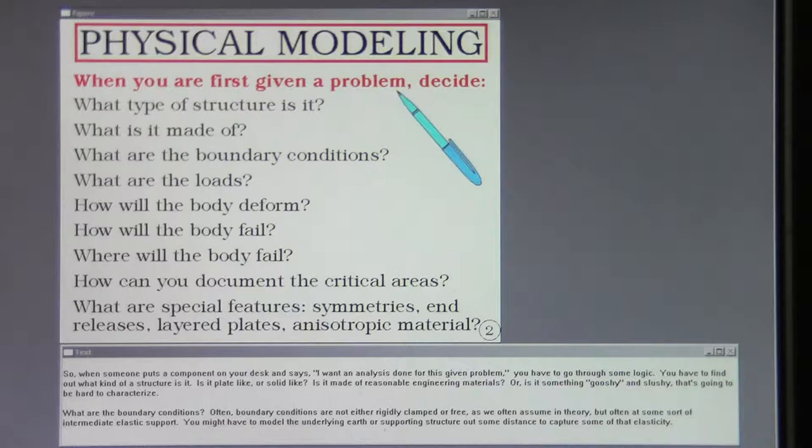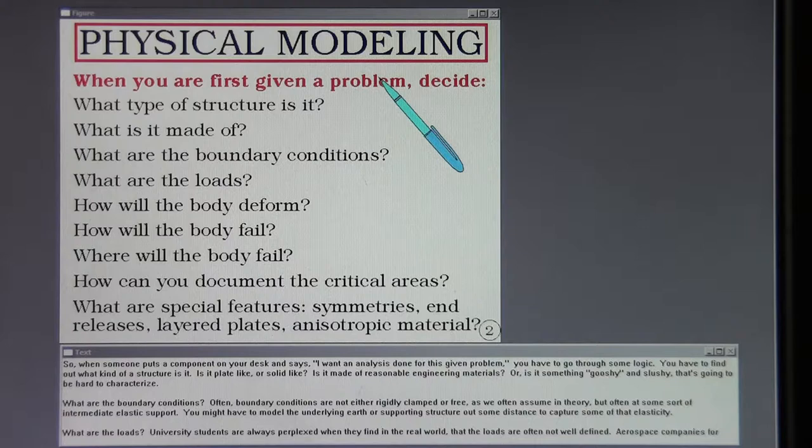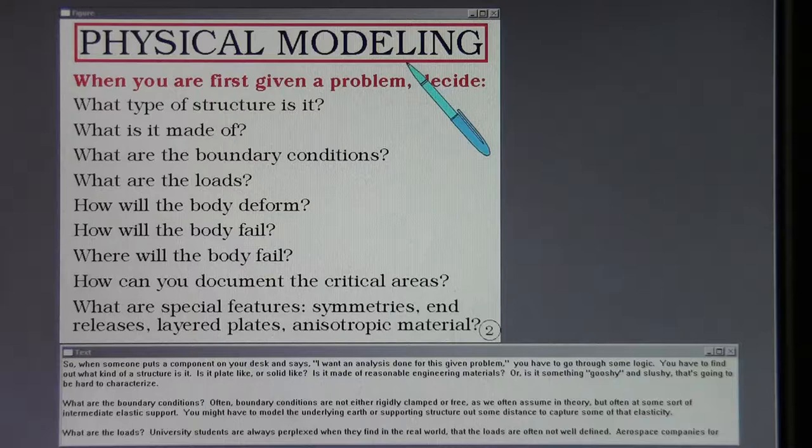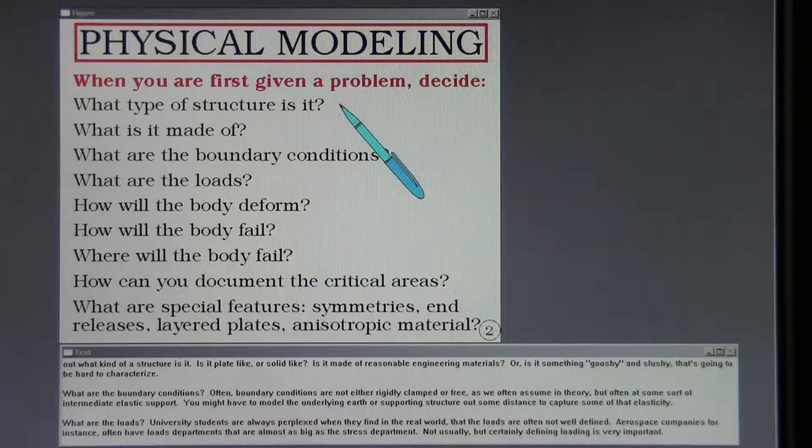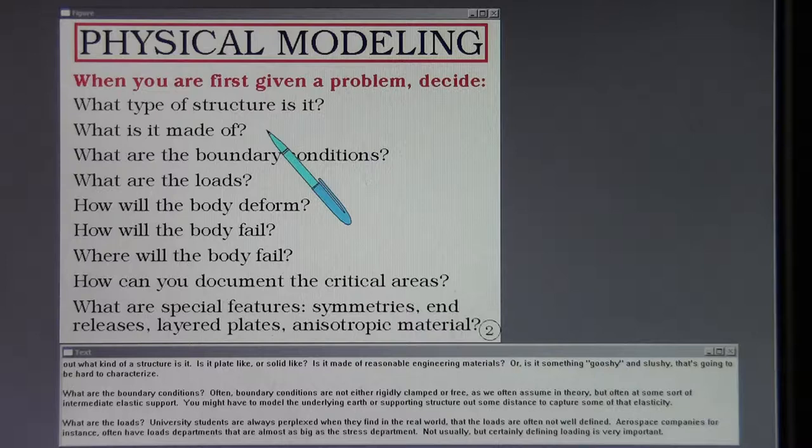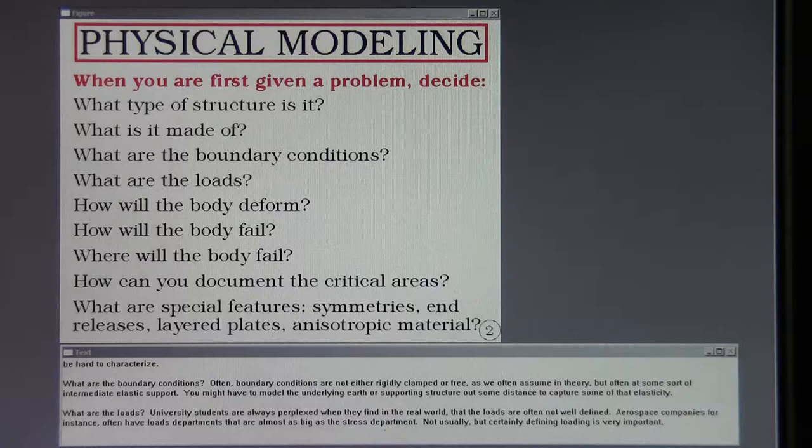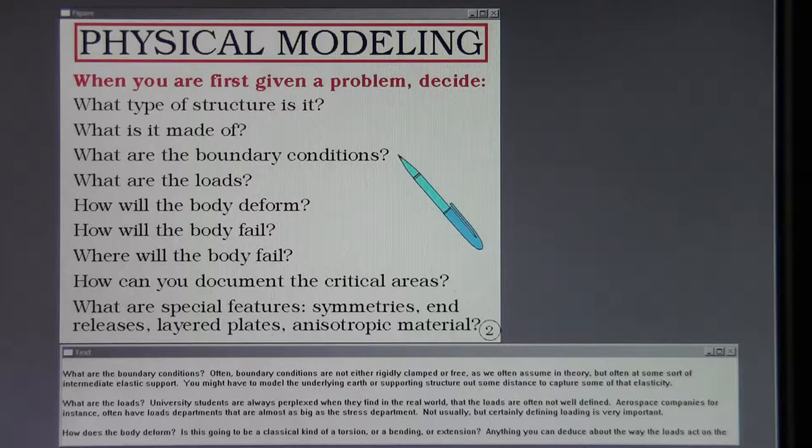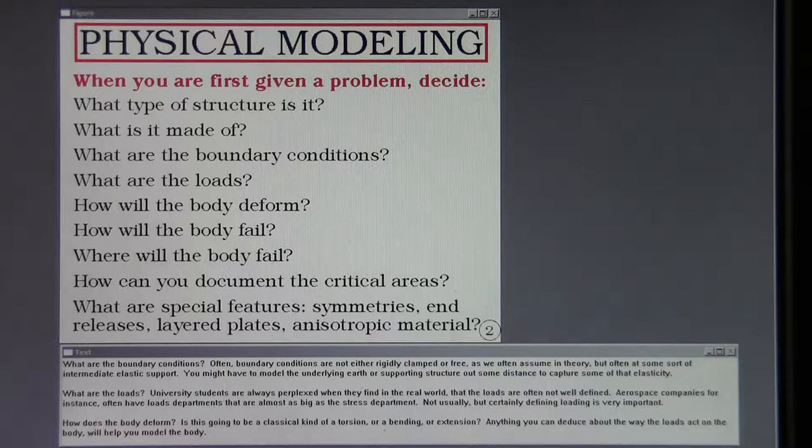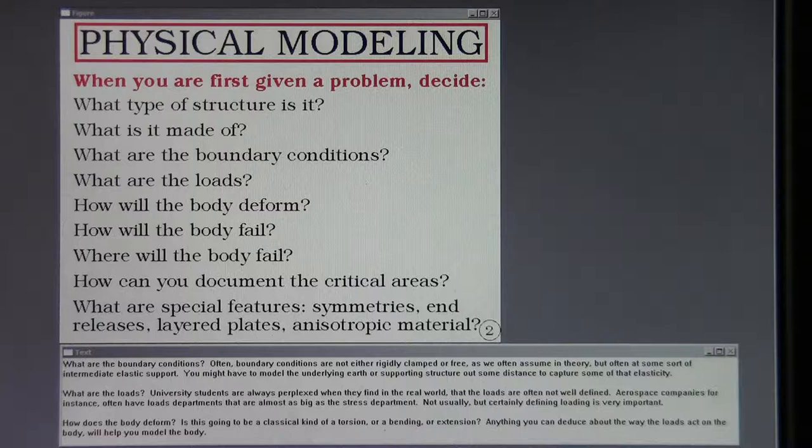So when someone puts a component on your desk and says, I want an analysis done for this given problem, you have to go through some logic. You have to find out what kind of a structure is it. Is it plate-like or solid-like? Is it made of reasonable engineering materials, or is it something gooshy and slushy that's going to be hard to characterize? What are the boundary conditions? Often boundary conditions are not either rigidly clamped or free, as we often assume in theory, but often it's some sort of intermediate elastic support. You might have to model the underlying earth or supporting structure out some distance to capture some of that elasticity.